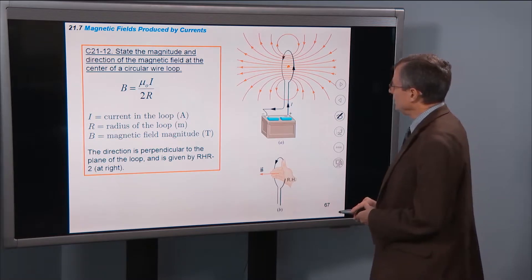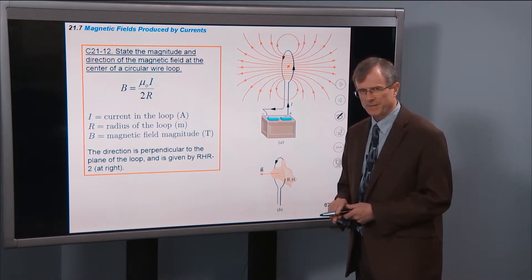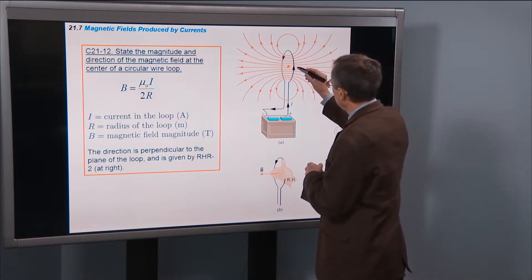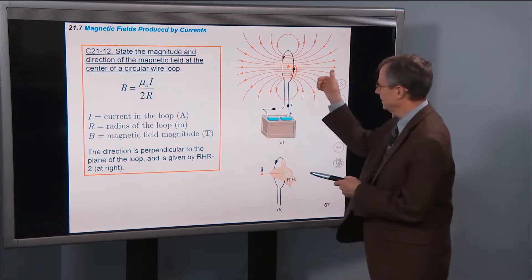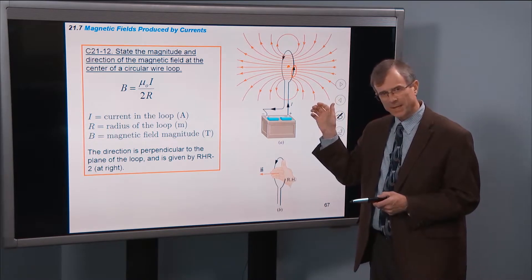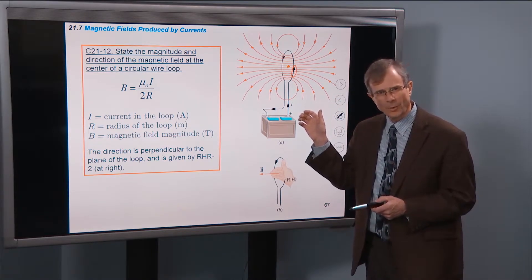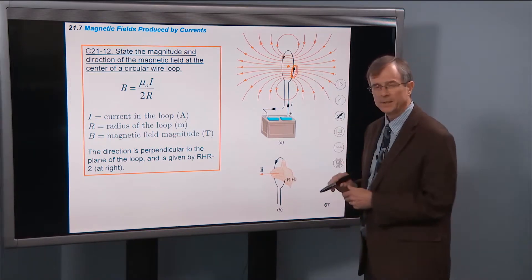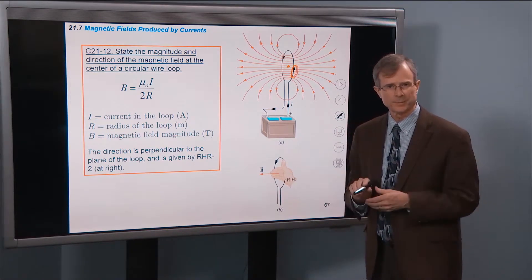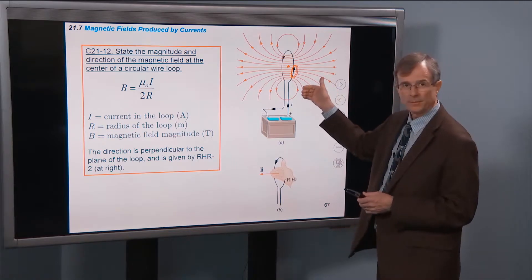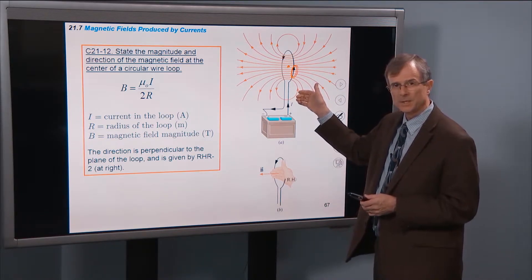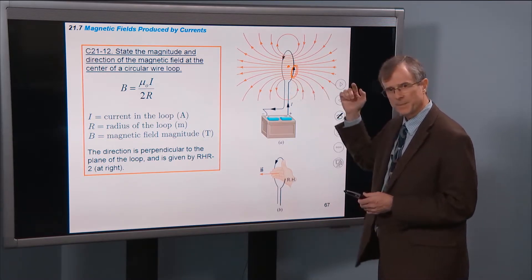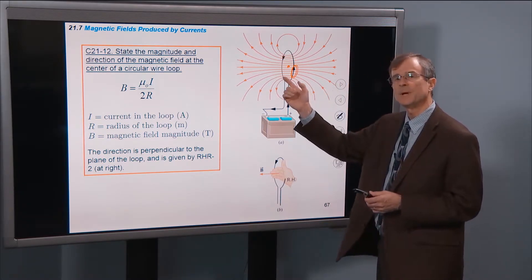And you can determine the direction of that by putting your thumb in the direction of this little current segment here with the right-hand rule that we talked about for individual wires. Just think about this as a long straight wire right here. Forget everything else for the moment. Stick your thumb in the direction of the current in that wire, and then curl your fingers in the direction of the magnetic fields produced by that wire.